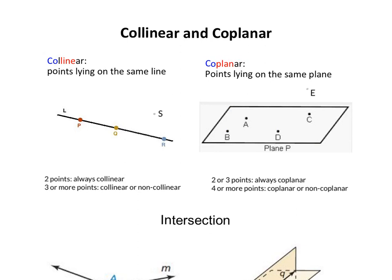If we add a point E here outside this plane, then you can never have a plane that includes E and other points. So we say point A, B, C, D, E together are non-coplanar points.